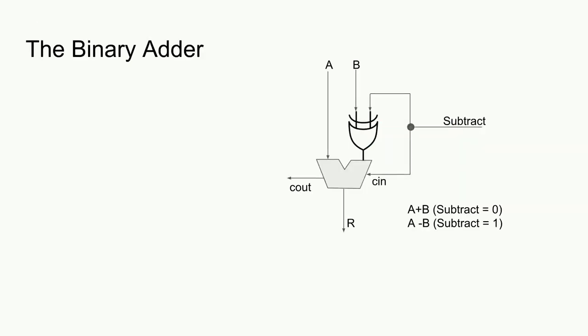A typical binary adder capable of performing two's complement binary addition and subtraction will look something like this. Notice how the subtract flag connects to both the carry-in to add 1 and the XOR gate for B, which allows for the operation A plus B and A minus B. For now, let's abstract this circuit away into a single unit.